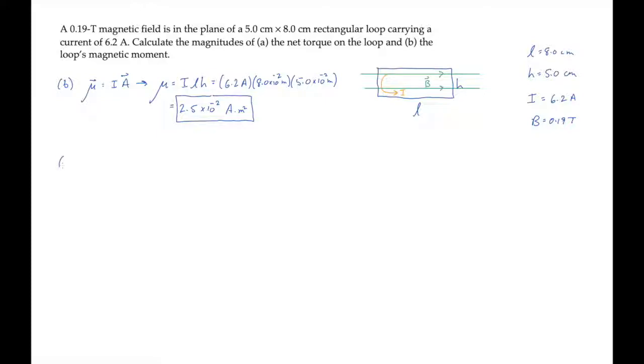Now we can solve part A, asking for the magnitude of the net torque on the loop. The torque on a current loop equals mu, the magnetic moment, crossed into the magnetic field B.